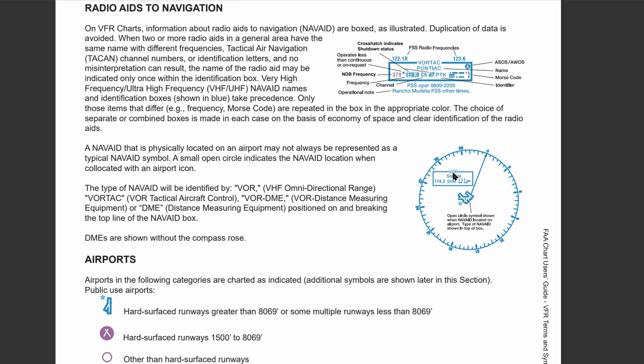So that's going to be it for our radio aids to navigation. Next, we're going to be looking at airports and continuing on with this VFR — visual flight rules — subsection.